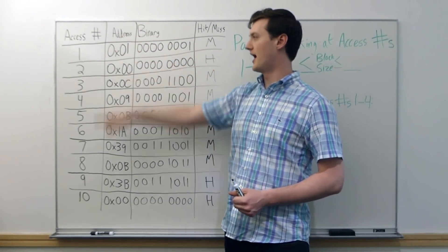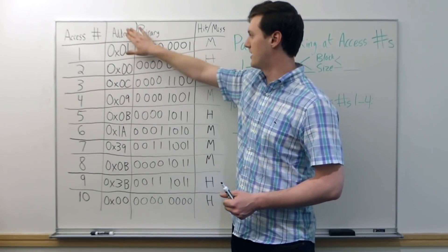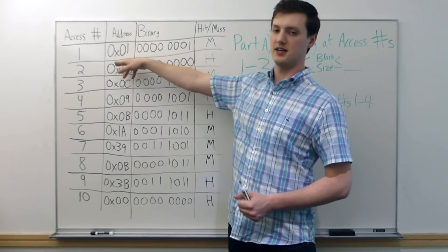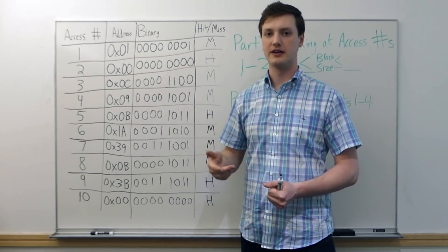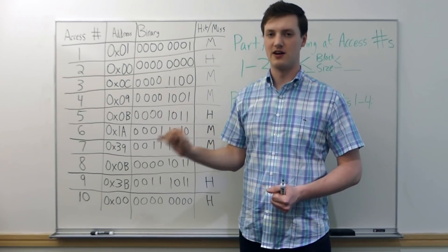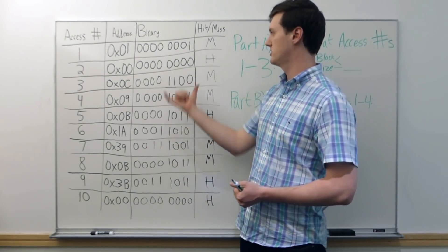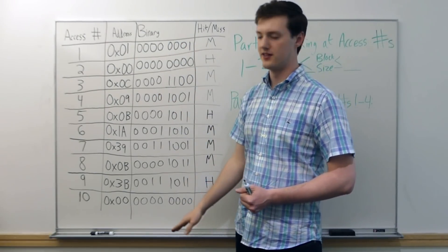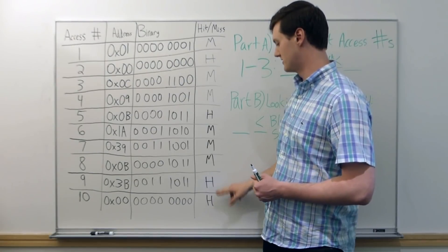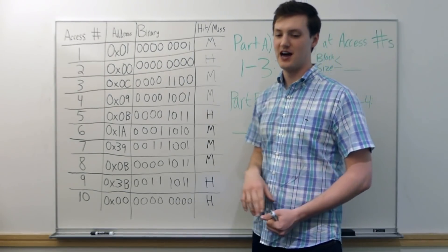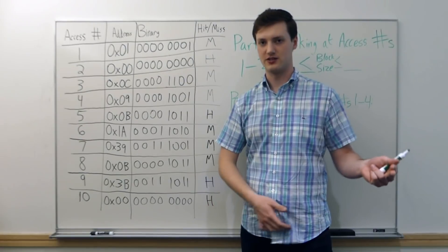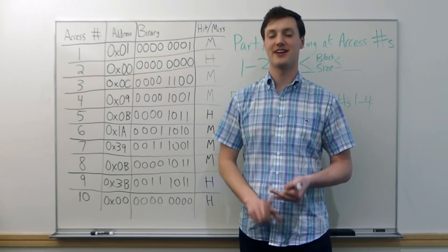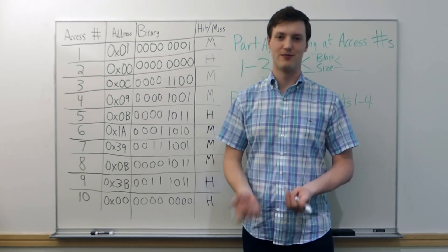I've written out all the accesses and the memory addresses. Something else I've done that isn't given in the problem is converting the hex addresses to binary, because when we're doing the breakdown of the memory addresses to see where things would go in the cache, the binary address is going to give us the most information. We were also given the different hits and misses. Our goal is to figure out the entire cache structure — we need to figure out the block size, the associativity, and the cache size.